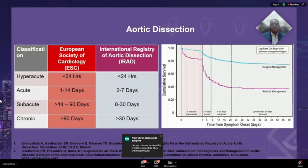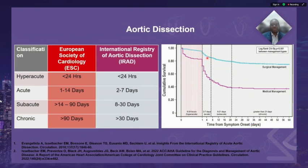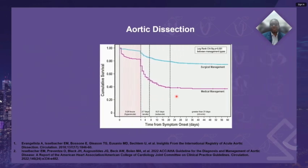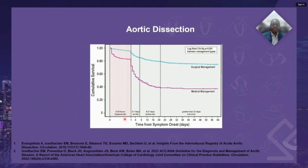The temporal classification of aortic dissection has been most recently described by Boer et al, using data derived from the International Registry of Aortic Dissection. This is based on Kaplan-Meier curves that denote distinct changes in survival across the time domains, dividing temporal aortic dissection into 0 to 24 hours as hyperacute, 2 to 7 days as acute, 8 to about 21 days as subacute, and further than that as chronic.